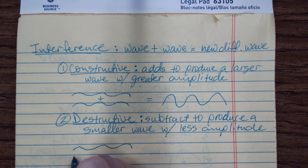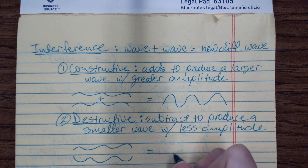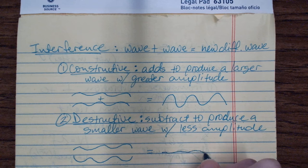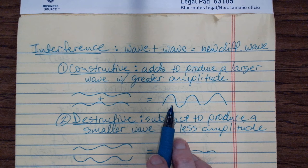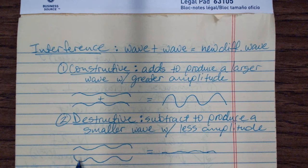With destructive interference, you have one wave where the troughs and crests line up exactly opposite to the other wave. What you end up getting is a wave that's similar but really small. The amplitudes of constructive interference add together to make a bigger amplitude, while with destructive interference the crests and troughs subtract from each other, and you end up with a weird-looking line that doesn't really look like a wave at all.